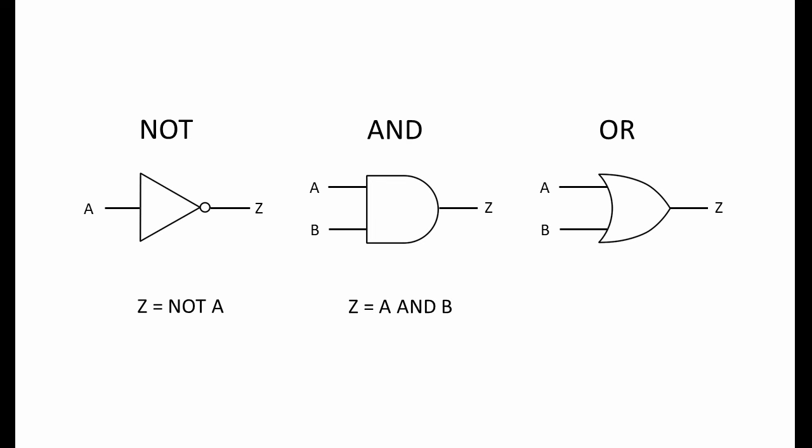With the AND gate, Z is the output of an AND operation on inputs A and B. In this case, Z equals A AND B. With the OR gate, Z is the output of an OR operation on inputs A and B. This time, Z equals A OR B.